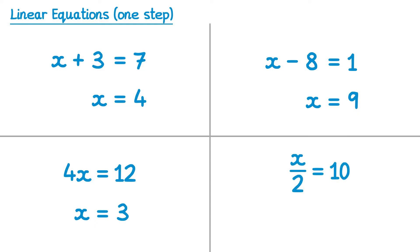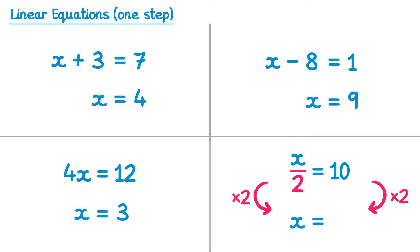Now there's one more we need to look at and this one is the most difficult. On the left hand side we have x over 2, which means x divided by 2. The inverse or opposite of dividing by 2 is multiplying by 2, and we'll do this on both sides. On the left hand side, x divided by 2 and then multiplied by 2 will cancel out, so we're just left with x. On the right hand side we have 10 multiplied by 2 which is 20. So we've solved this equation: x equals 20.